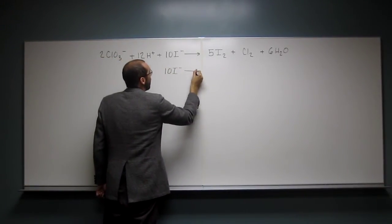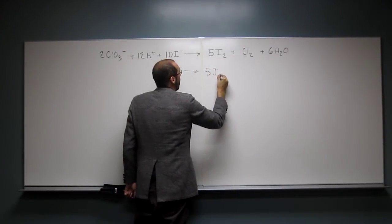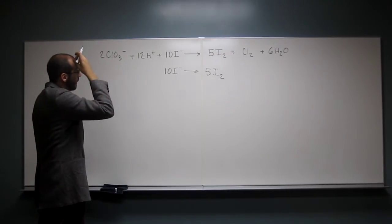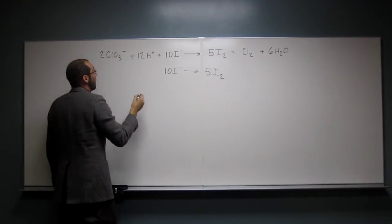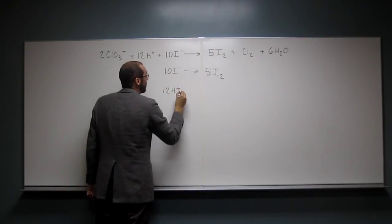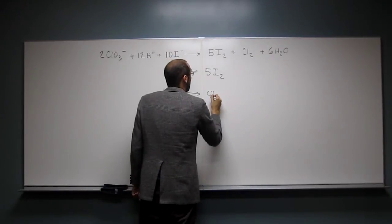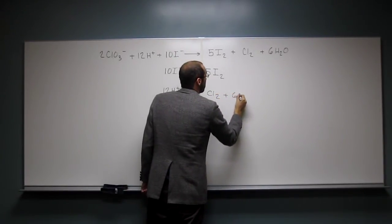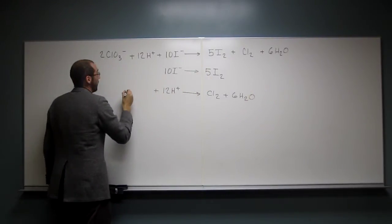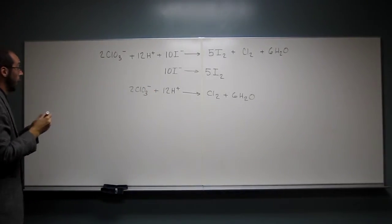And the other one then would be everything else. So 12H plus goes to 6H2O and IO3 minus.